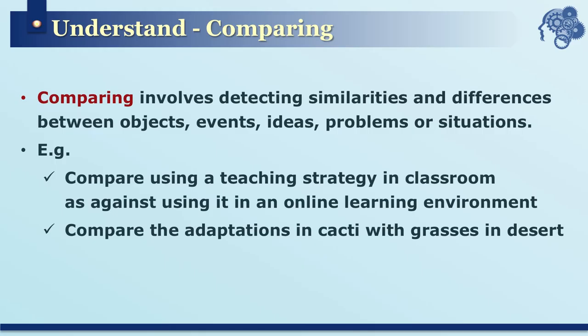The next subcategory is comparing, which involves comparing the similarities and differences between instances, events, objects, ideas, problems, or situations. For example, comparing vegetation found in desert regions such as cacti and different grasses. Also, if a learner is taught a classroom strategy and is asked how that strategy can be adapted for an online learning environment, that is also comparing.